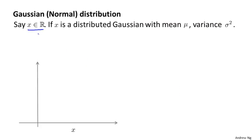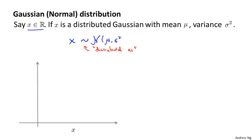Let's say x is a real-valued random variable. If the probability distribution of x is Gaussian with mean mu and variance sigma squared, we'll write this as x ~ N(mu, sigma squared). This script N stands for normal, since Gaussian and normal distribution are synonyms. A Gaussian distribution is parameterized by two parameters: a mean parameter mu, and a variance parameter sigma squared.